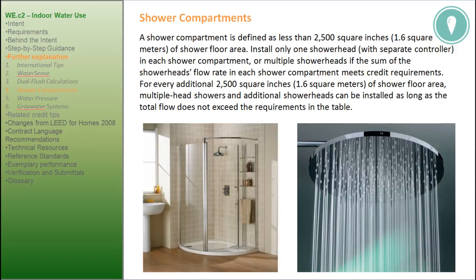Shower compartments: a shower compartment is defined as less than 2,500 square inches or 1.6 square meters of shower floor area. Install only one shower head with a separate controller in each shower compartment, or multiple shower heads if the sum of the shower heads' flow rate in each shower compartment meets credit requirements. For every additional 2,500 square inches or 1.6 square meters of shower floor area, multiple head showers and additional shower heads can be installed as long as the total flow does not exceed the requirements in the table.